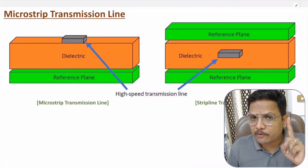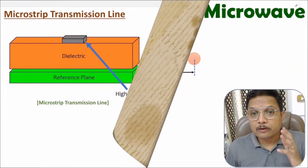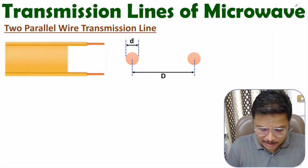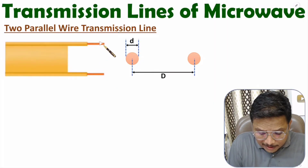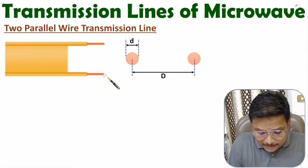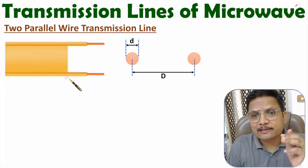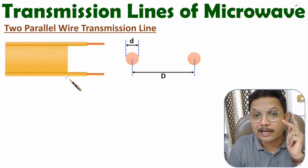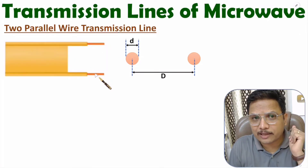Let us begin this session with the first agenda, that is the two parallel wire transmission line. Two parallel wire transmission line is quite simple in structure. You can observe here we have two parallel wires, and these two parallel wires are supported by dielectric material to separate these two wires. In the 1990s and early 2000s, we were using this two parallel wire transmission line with telephone networks to carry telephone signals.